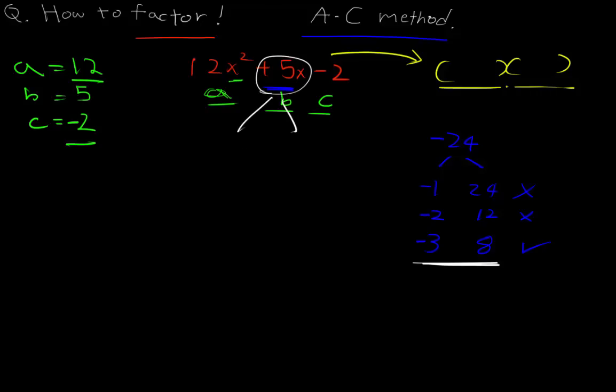We have 12x², just bring it down. What you're going to do is take this 5 and break it into these two we just found: -3x and +8x.